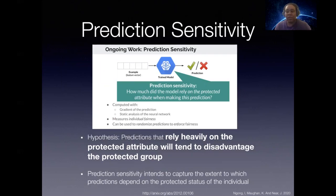In prediction, the gradient determines how the model weight should be moved to reduce the loss. We're asking the question: how would the prediction change if the person were a member of the group or were not a member of the group they're currently a member of. So if we move them from an advantaged to a disadvantaged group, how much has the prediction changed? And we do that by looking at the gradient of the prediction itself with respect to the protected attributes that indicate membership in one group or the other. The gradient of the prediction may not be smooth at a particular point and may not indicate what happens in the neighborhood of that point.